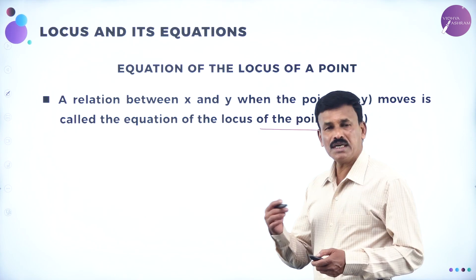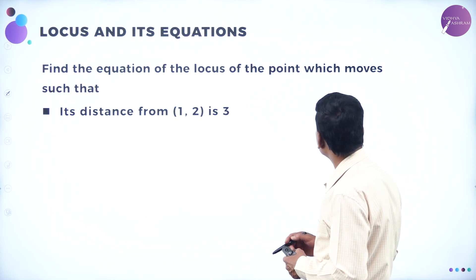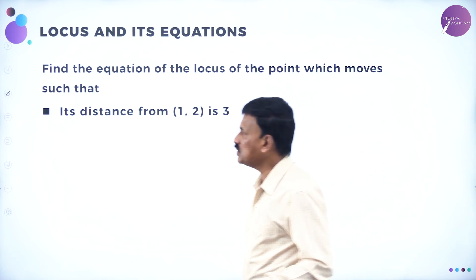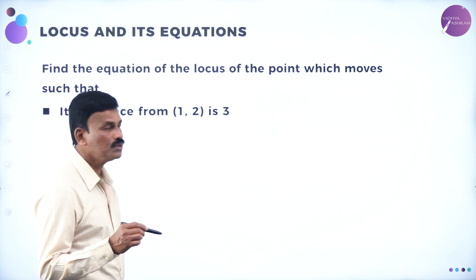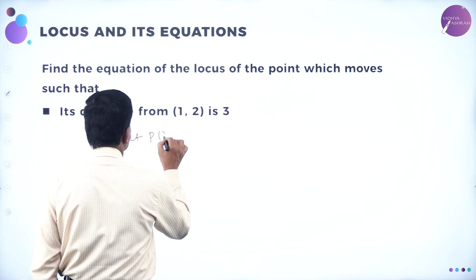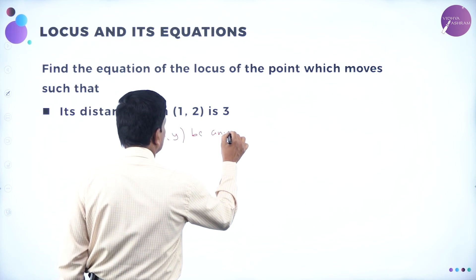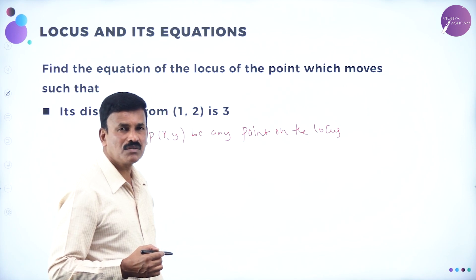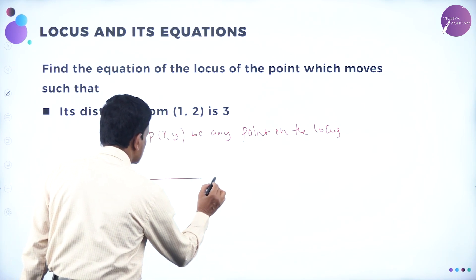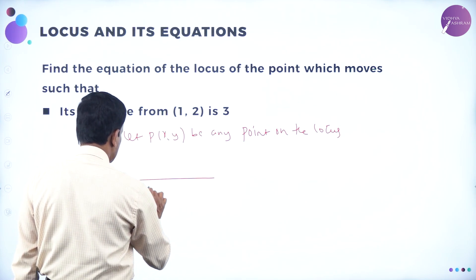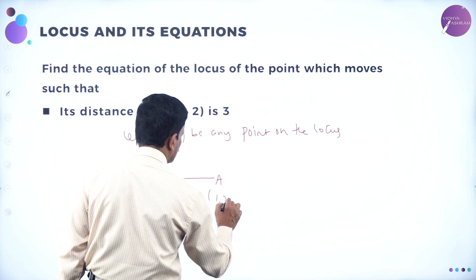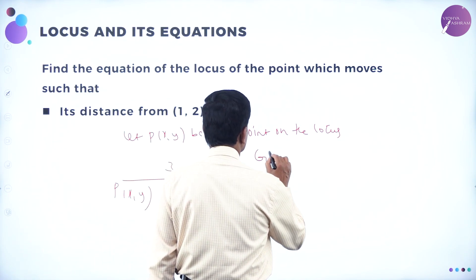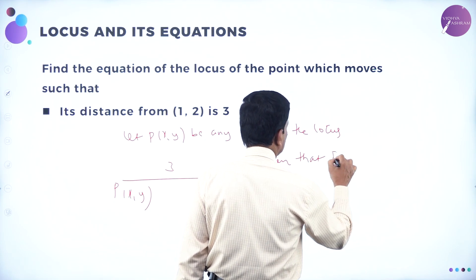Now, equation of the locus. Let us take an example: find the equation of the locus of a point which moves so that its distance from (1, 2) is 3. Let P(x, y) be any point on the locus. Its distance from A(1, 2) is 3, that is PA = 3. The given condition is PA = 3.